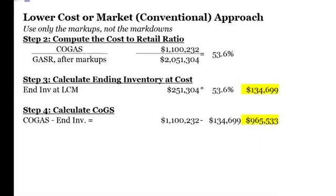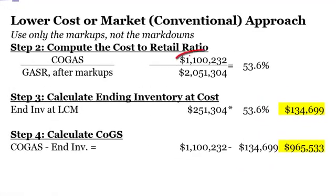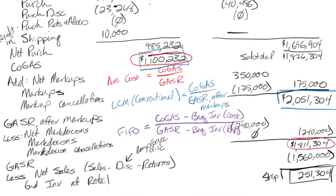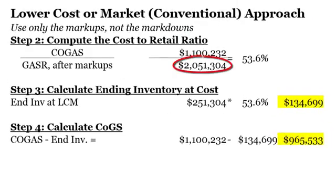So first off we have our lower cost to market approach. Here we use the cost of goods available for sale. We divide by goods available for sale after markups, which we circled on our table. You see it there in blue, $2,051,304. And we see it here again, $251,304. If I divide that I get 53.6%. I take the ending inventory at retail times that 53.6% and there's my ending inventory at the lower of cost to market estimate.